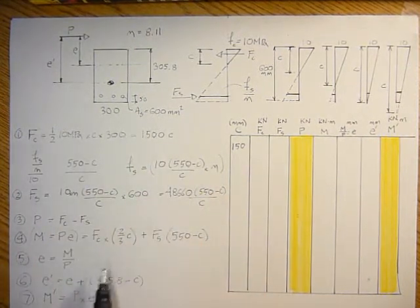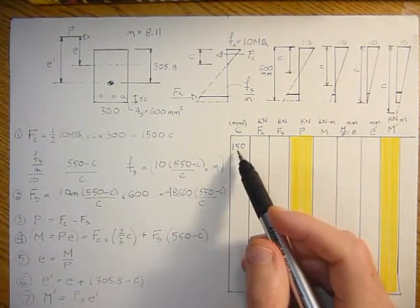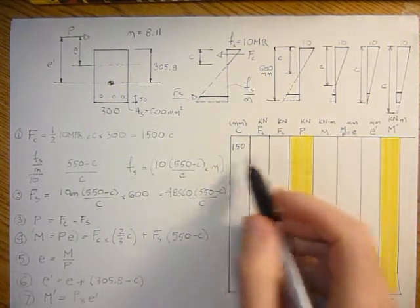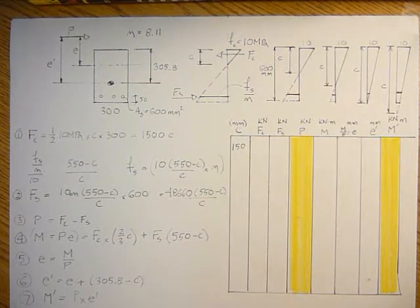With these equations, we can now take a neutral axis location. Let's start with 150 and punch through the numbers. We'll do a few examples.